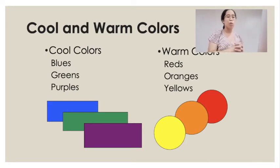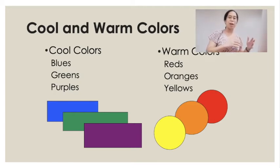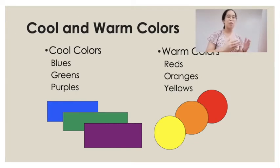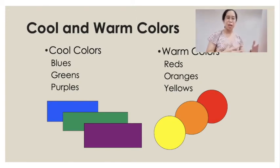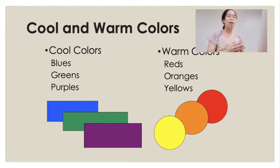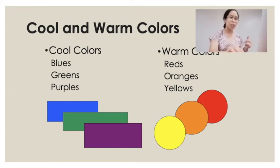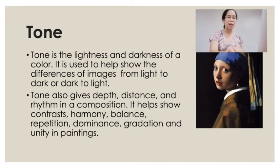With colors, there are also specific considerations. We have cool colors — blues, greens, and purples — if you want an ambience of coolness. But if you want warmer colors, you have reds, oranges, and yellows. There is a lot more to learn about colors, especially in the psychology of colors, but let's continue with the next elements.